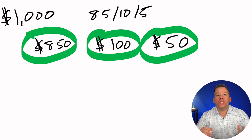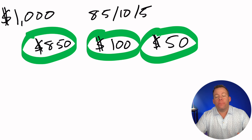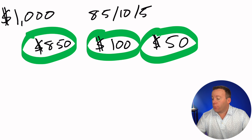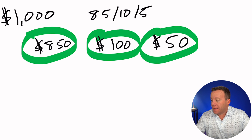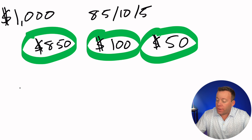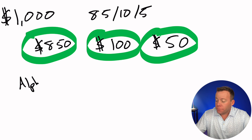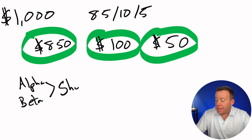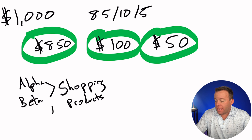The biggest chunk of this budget — the $850 — is going to go to getting people that are already searching for what you sell. The best way to do that with Google Ads is through Google Shopping campaigns, and my advice is to create two of them. We create a campaign called Alpha and a campaign called Beta, and these are both shopping campaigns that include all of our products. Now, why do we create two when they all have the same products in them?